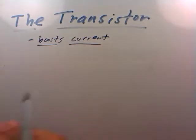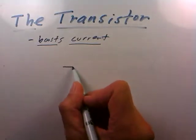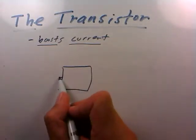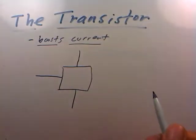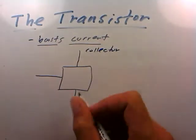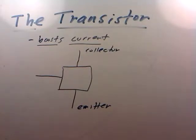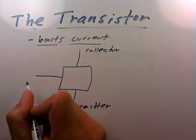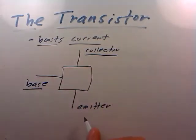Let me tell you how it works in a nutshell. What the transistor does is boost current. Another way you might think about boosting is the word 'amplifier,' which comes up a lot in electronics. So yes, the transistor is a current amplifier. Here's how it works: let's ignore the internals of the transistor and draw out the three key terminals. The one up here is called the collector, the one down here is called the emitter. These names are traditional — they go back to the original design. The third terminal is called the base.